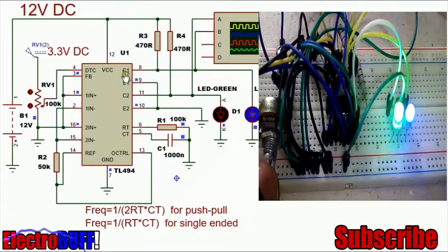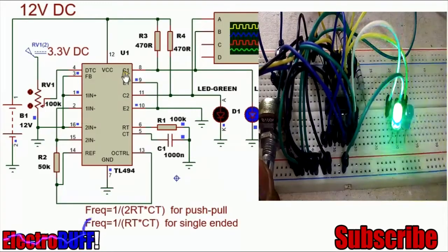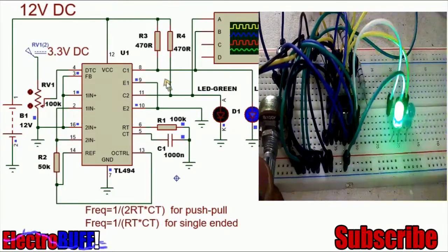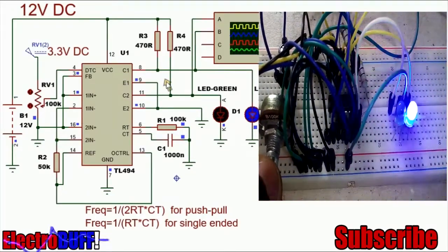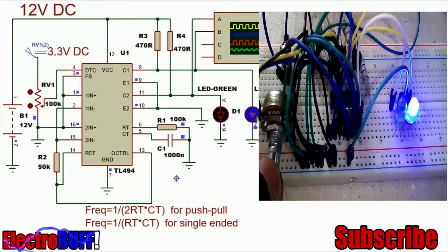By push-pull, I mean that the output transistors will be operating as complements of each other, while in parallel they will both be turning on and off at the same time. You can use two LEDs as indicators.